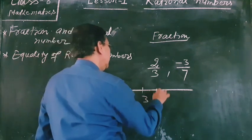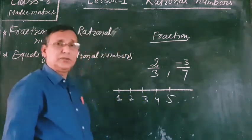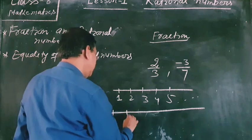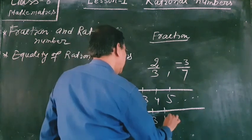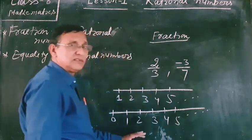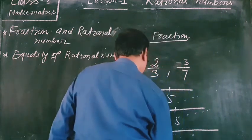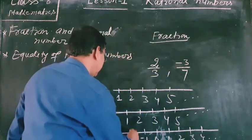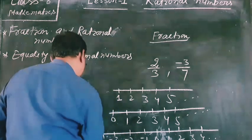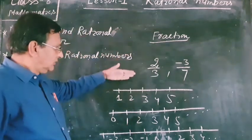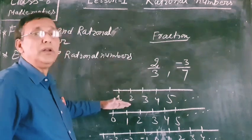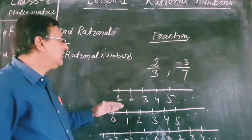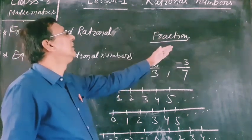Consider the natural numbers: 1, 2, 3, 4, 5. Then whole numbers: 1, 2, 3, 4, 5. Then integers: 1, 2, 3, 4, minus 1, minus 2, minus 3, and so on. All natural numbers are also whole numbers, all whole numbers are also integers, and all integers are rational numbers.